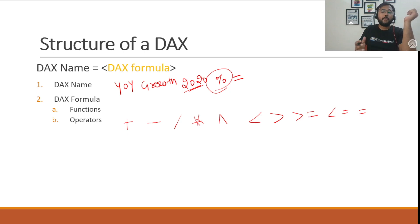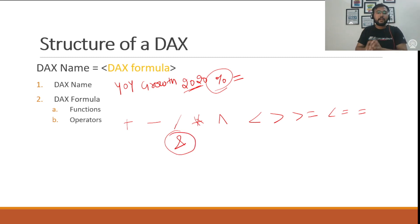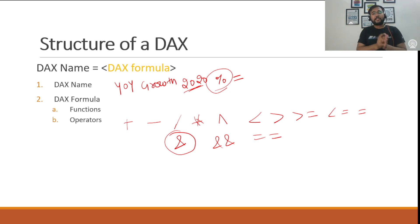The third type of operator is special operators. For example, we have the ampersand (&). This is a special operator which we use to concatenate two different strings. Then we have the double ampersand (&&), double equals (==), and many more. These are the operators that you can use while writing your DAX formula.